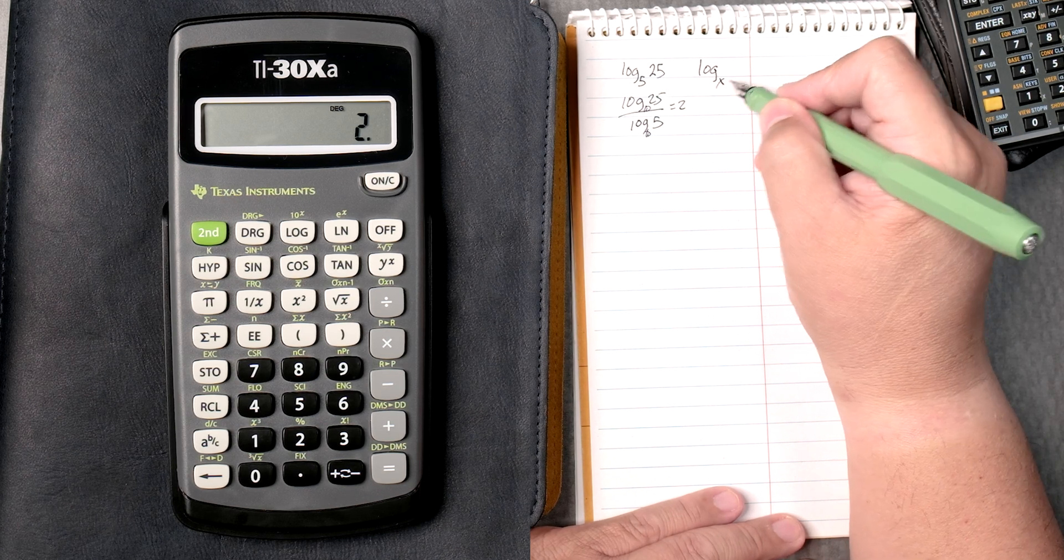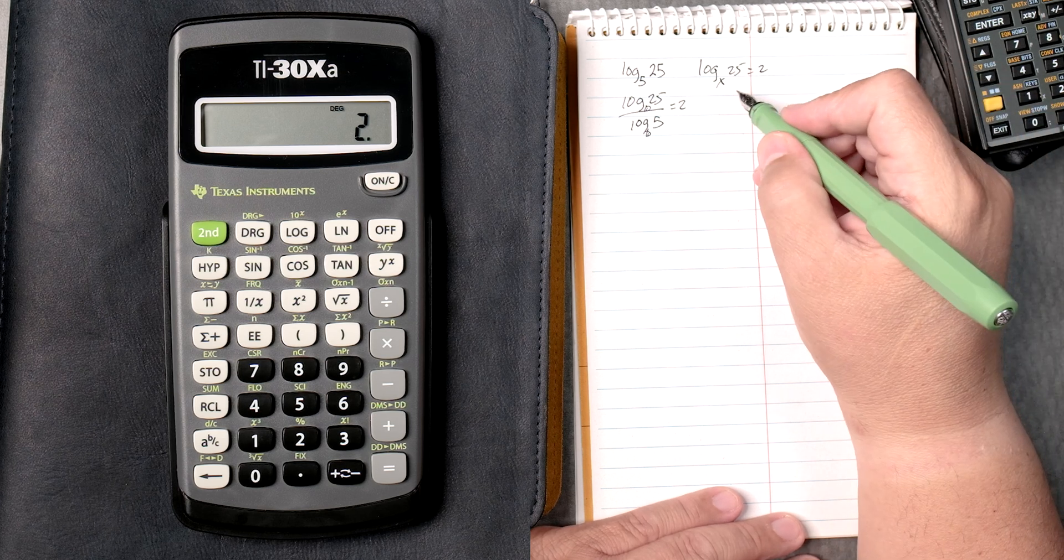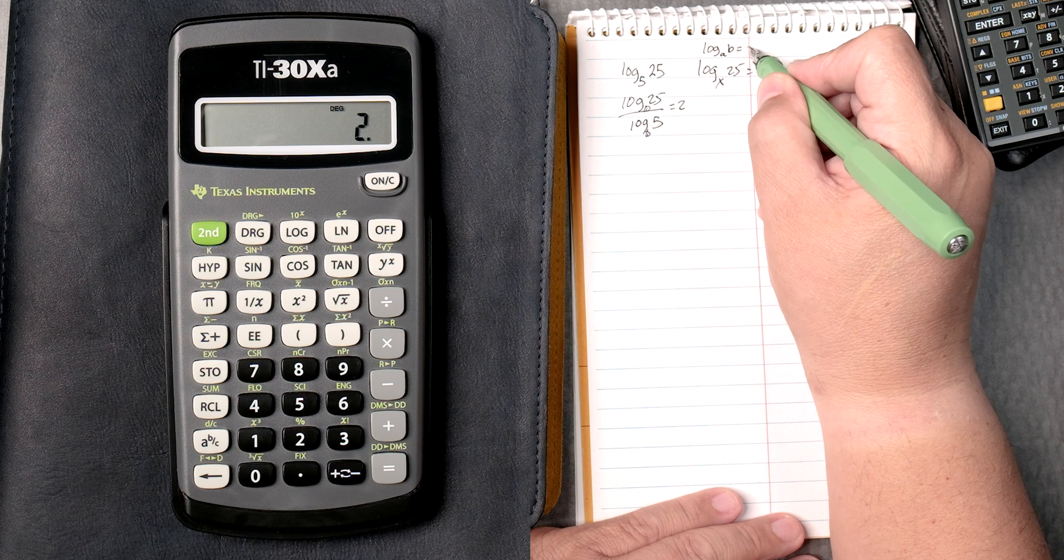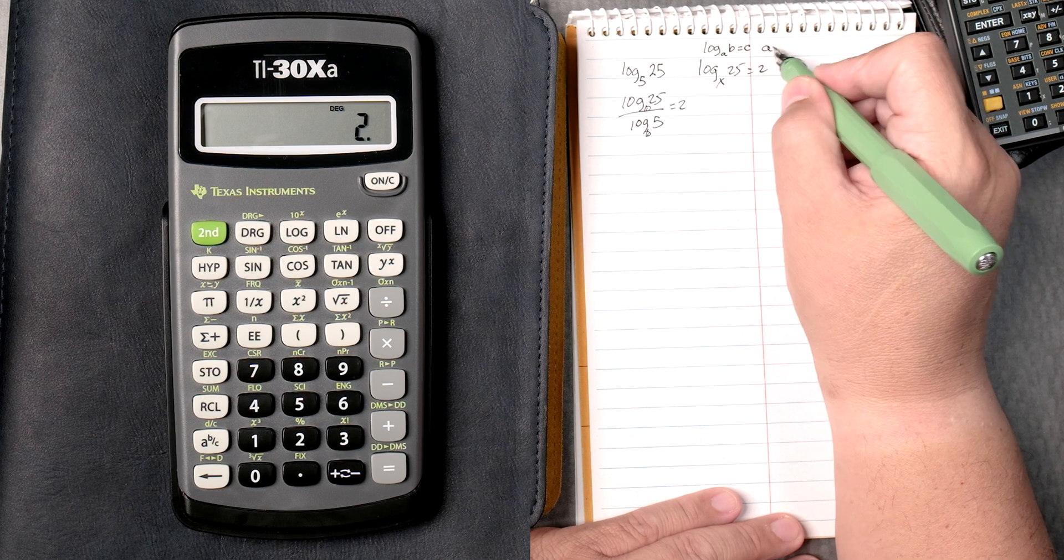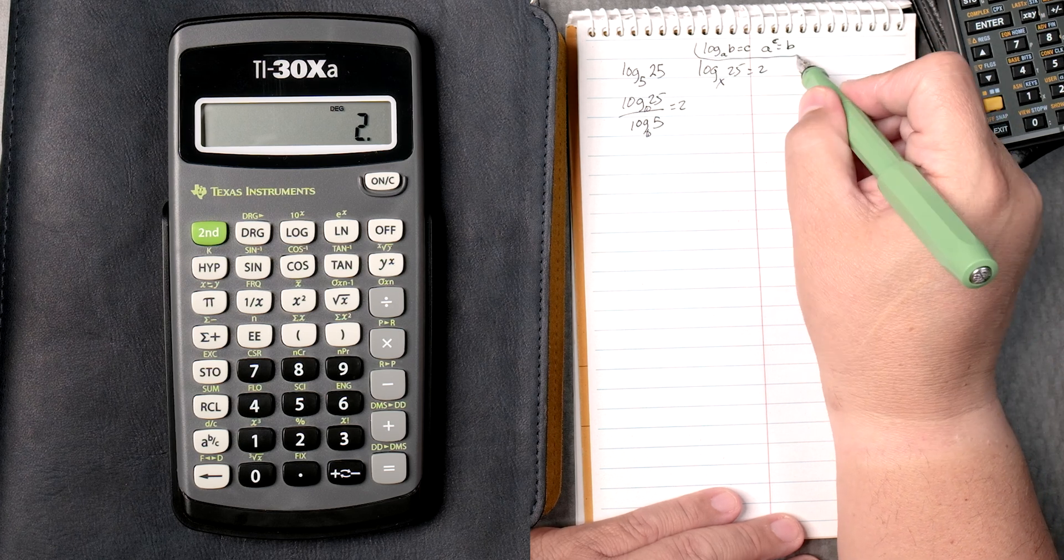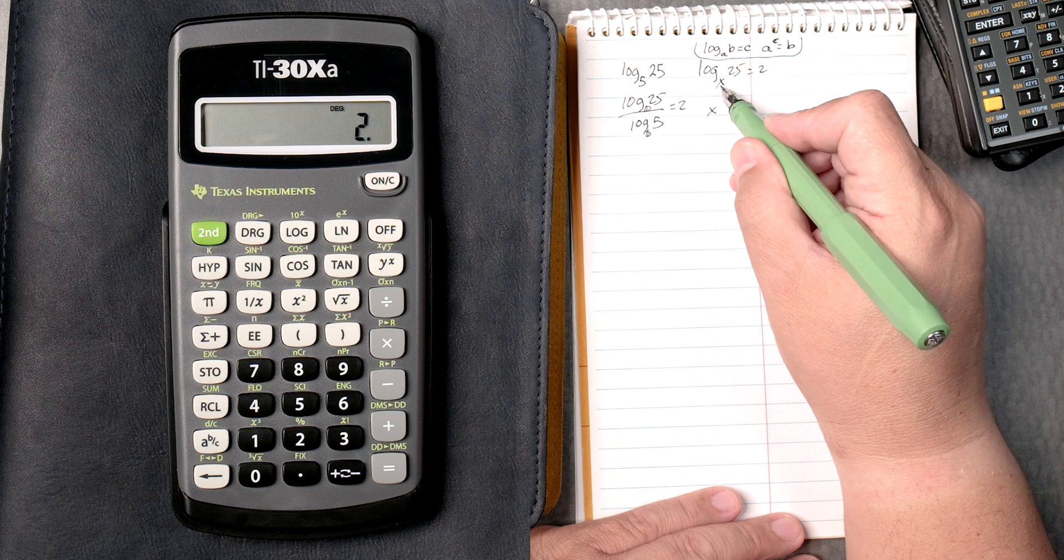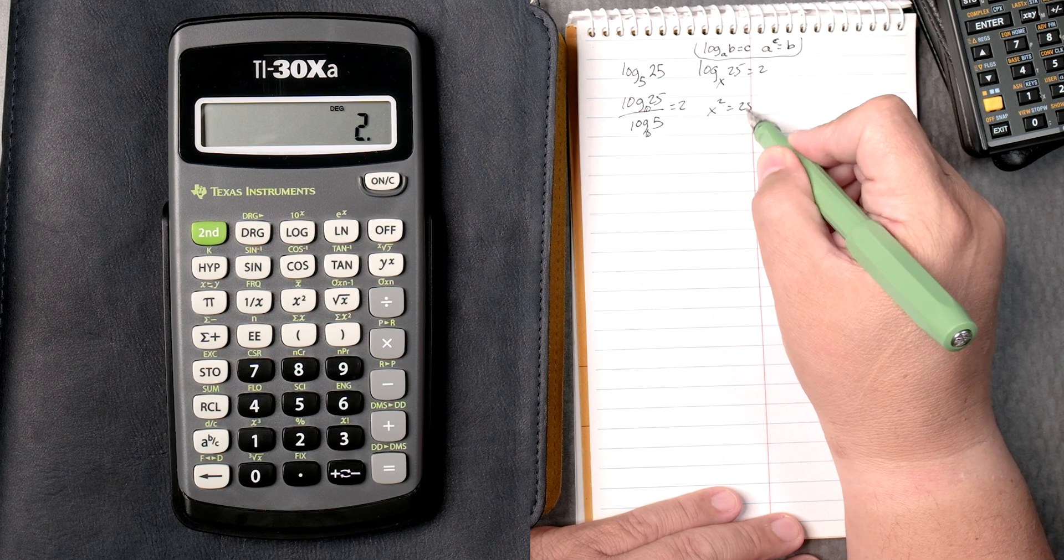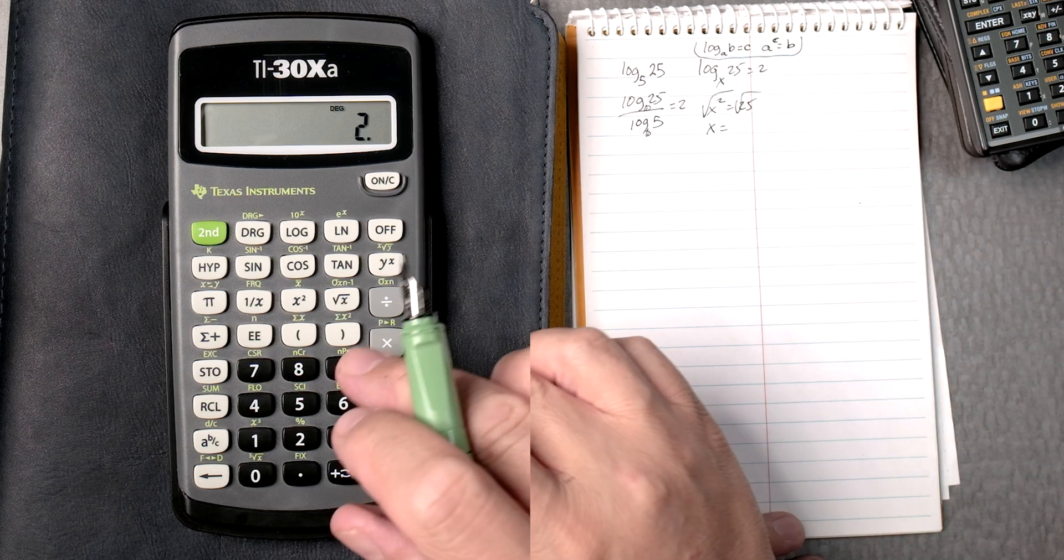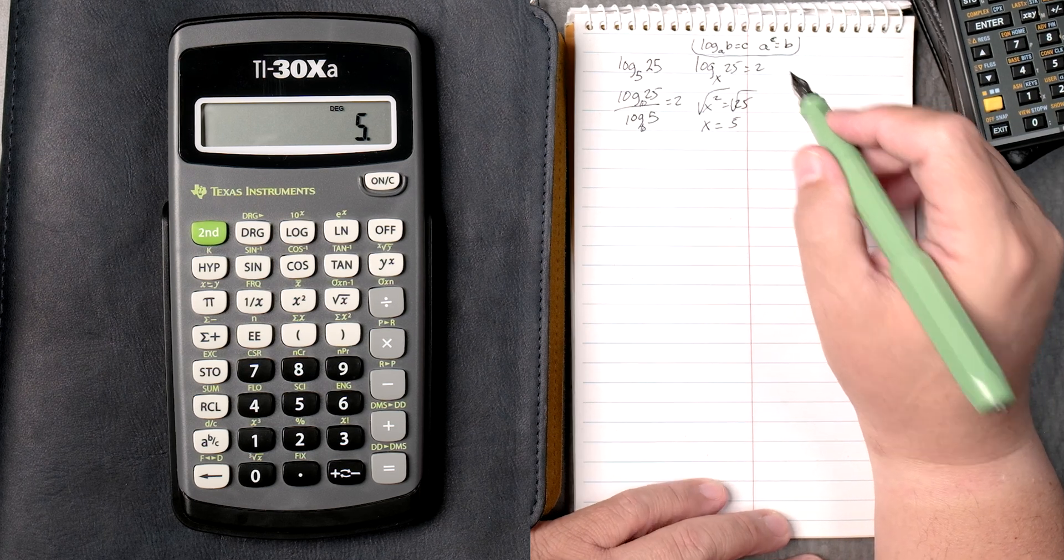Log of x, 25, log of base x, 25 equals 2. There's a rule that says that the log of base A, B equals C, which means A to the C equals B. This rule is important while we do this. So here, to solve it, we go x to the second power equals 25. We take the square root on both sides, x equals what? Well, 25 square root gives you 5. Very nice and clean.